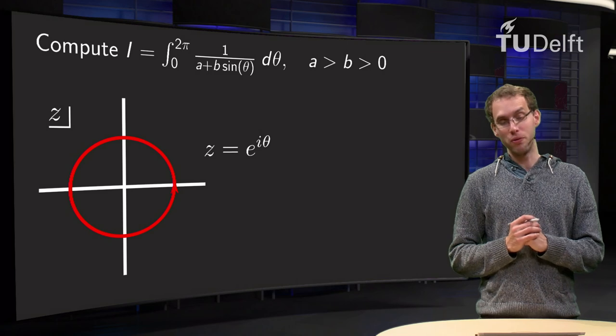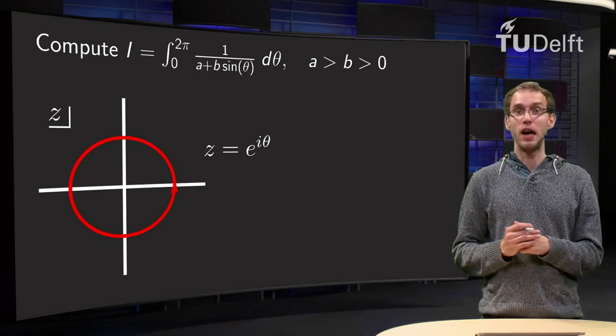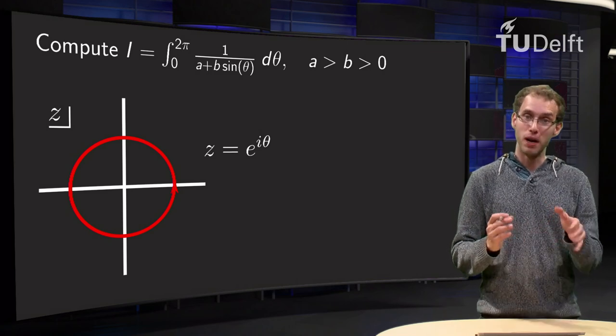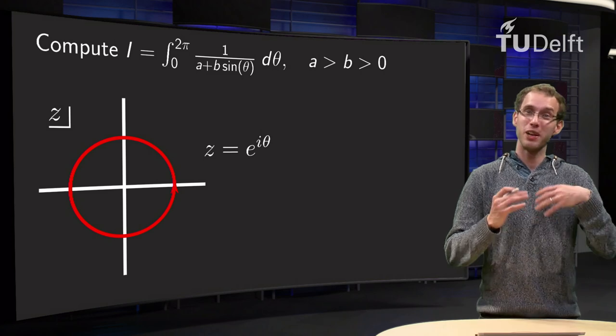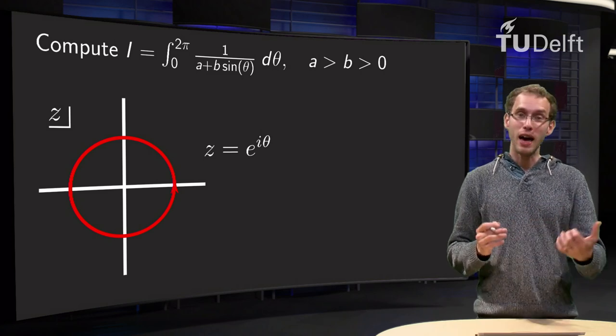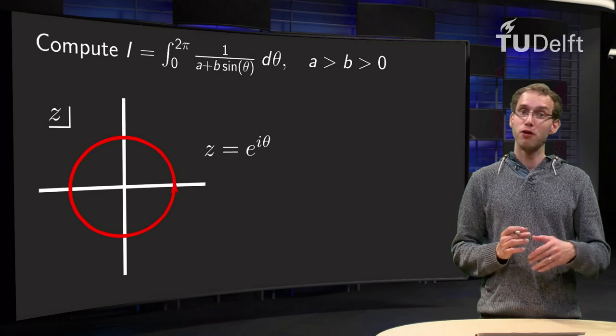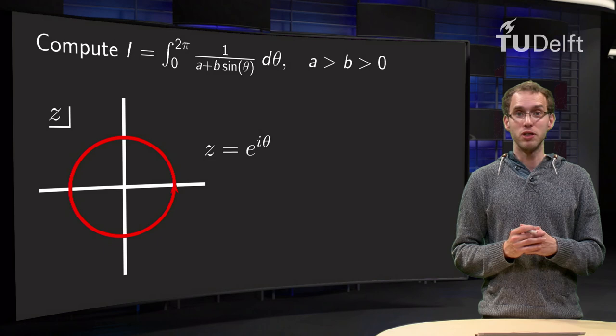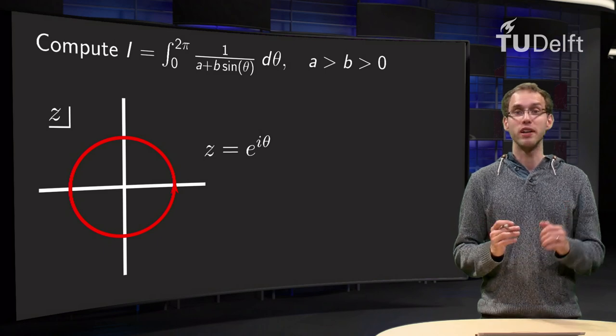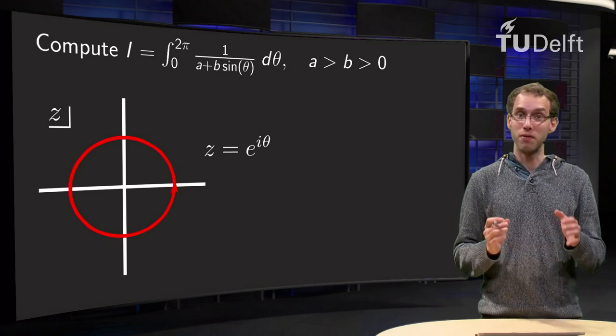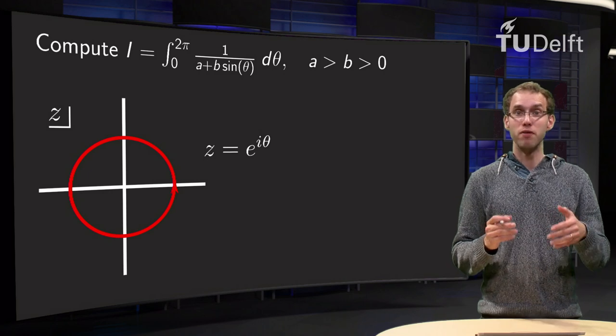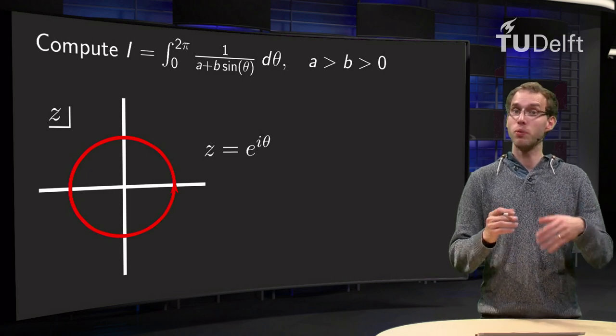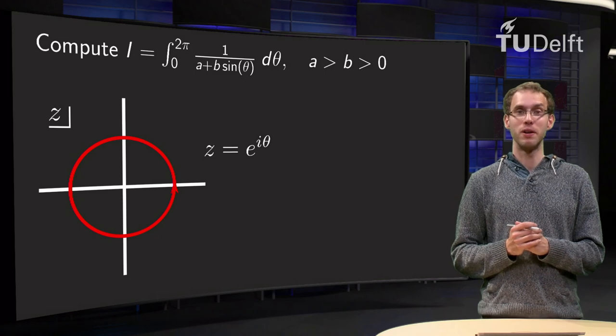As an example we will use the integral of 1 over a plus b times sin theta, with parameters a and b, so actually already quite a difficult one. a and b have to be positive, we require that, furthermore we want a to be bigger than b, because if we take a bigger than b we are sure that a plus b times sin theta is never zero, so the function is nice and positive everywhere, so we expect in the end to end up with some positive number.